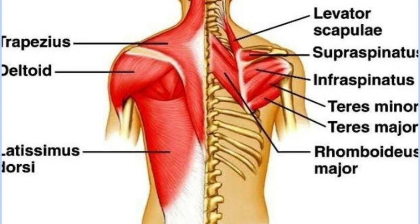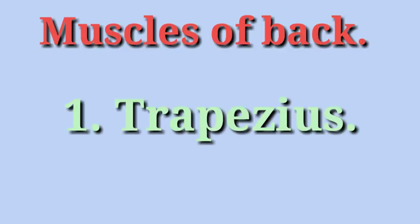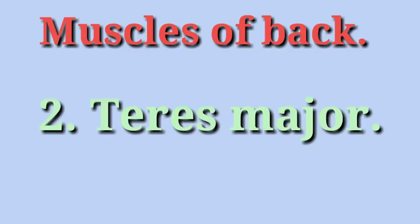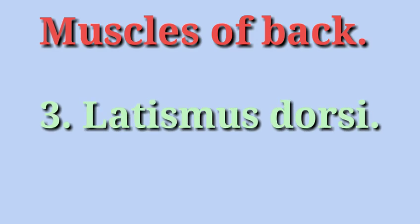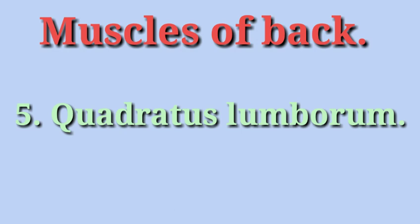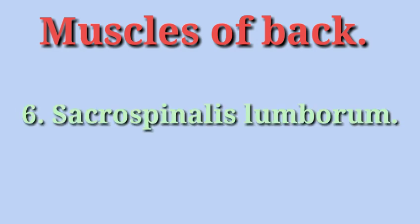Muscles of the back are involved in spinal function and are attached to the back of the spine. These muscles allow us to stand and lift objects. They are: trapezius, teres major, latissimus dorsi, psoas, quadratus lumborum, and sacrospinalis.